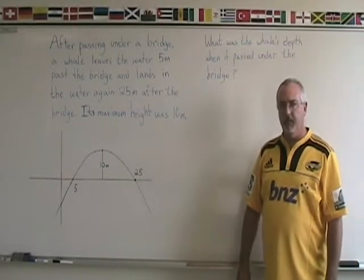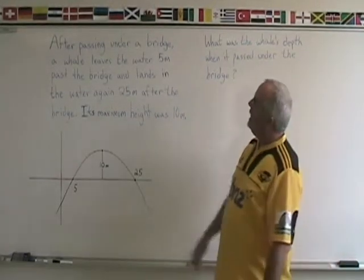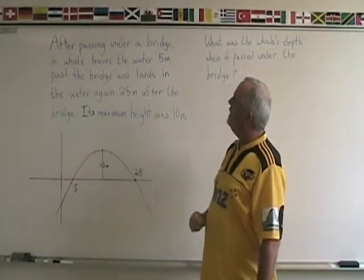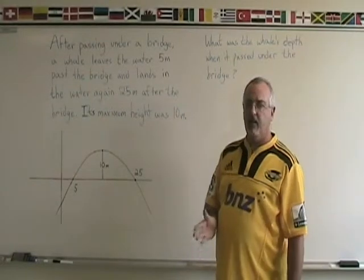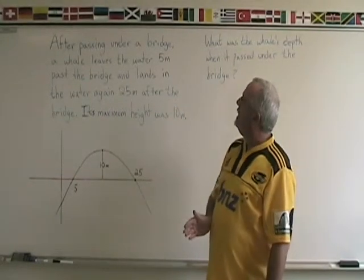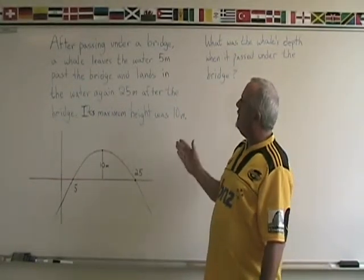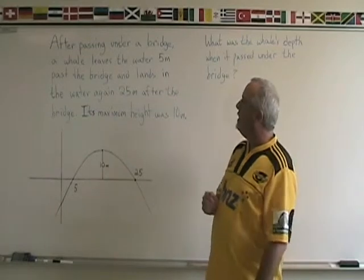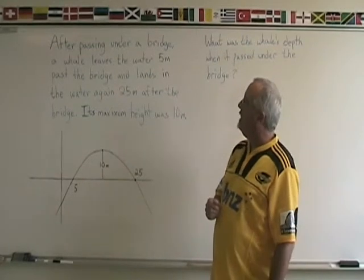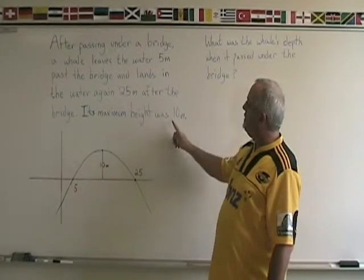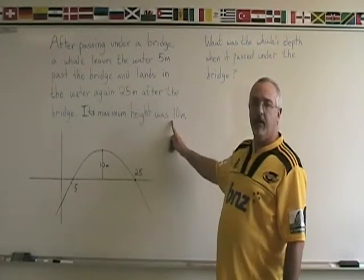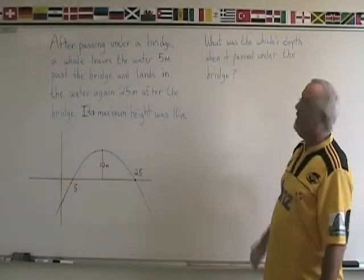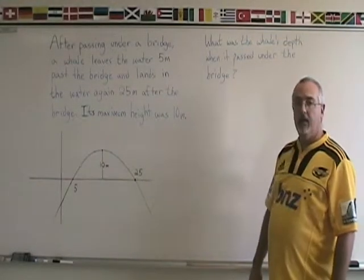Here we have a word problem. After passing under a bridge, a whale leaves the water 5 meters past the bridge, jumps through the air, and lands in the water again 25 meters after the bridge. Its maximum height was 10 meters. What was the whale's depth when it passed under the bridge?